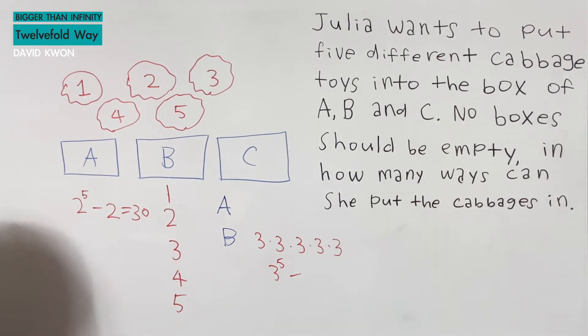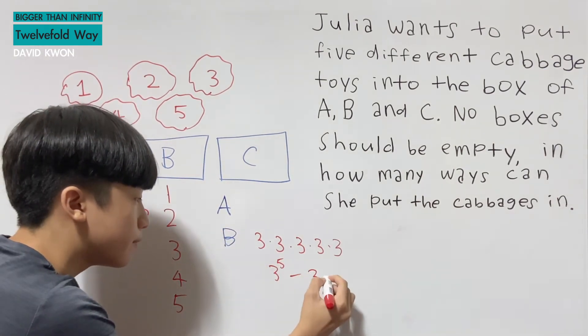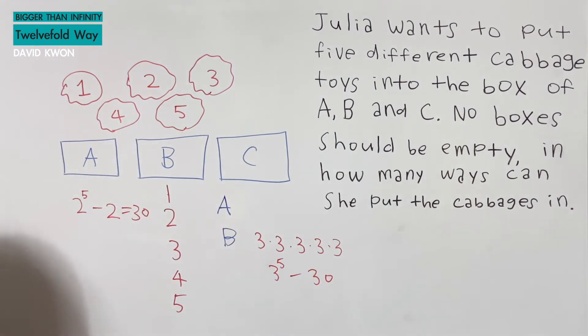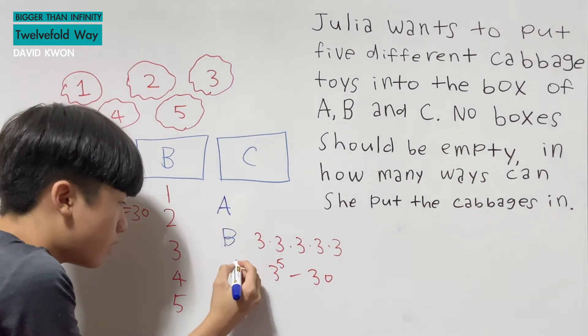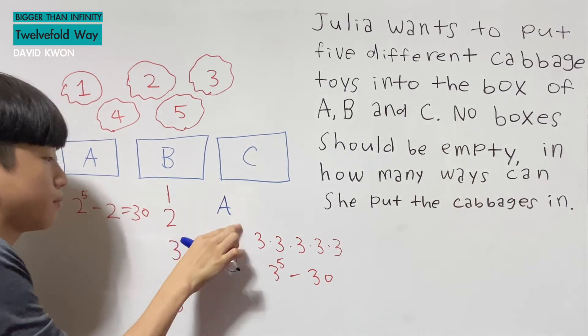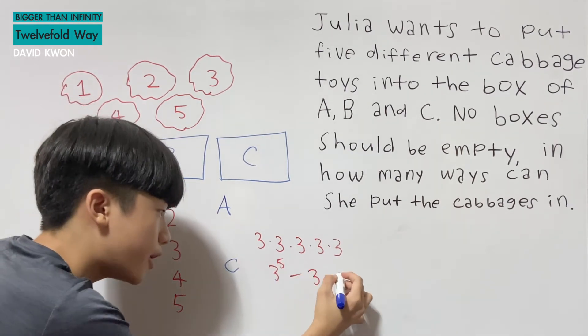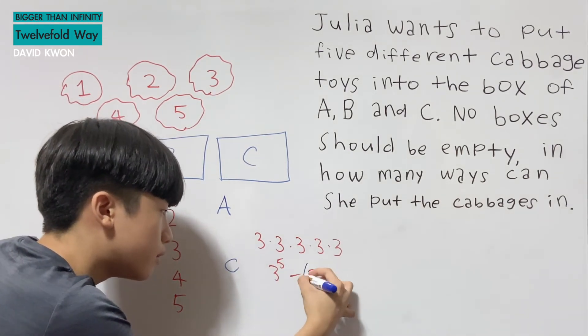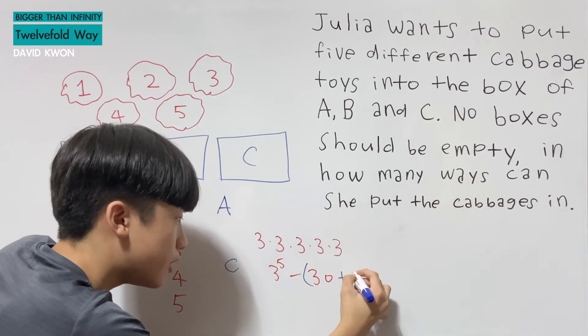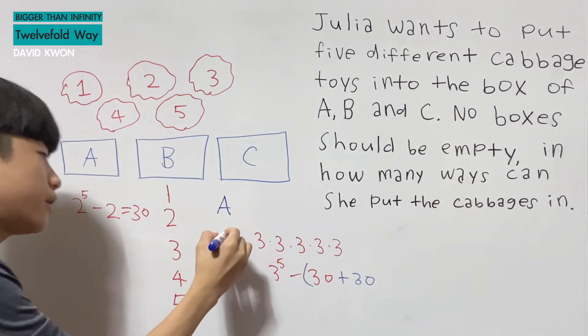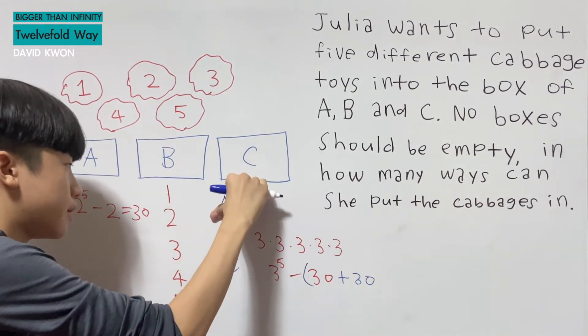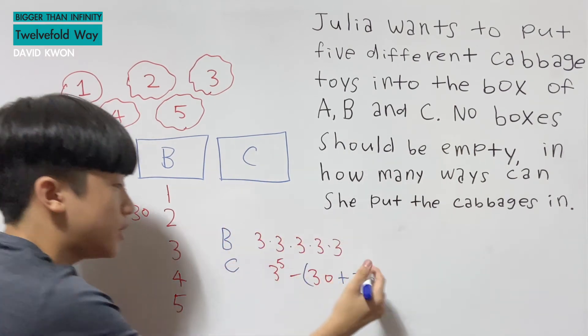So we have 30 here, minus 30. But what if C wasn't gone and B was gone? It's still 30, right? Yeah, but let's put a parenthesis, plus 30. And again, if B was still here and A was gone, it is still 30.